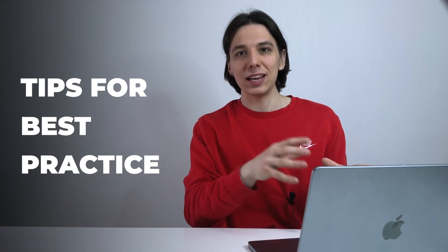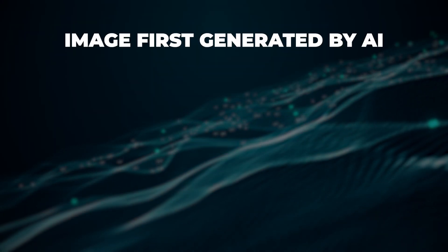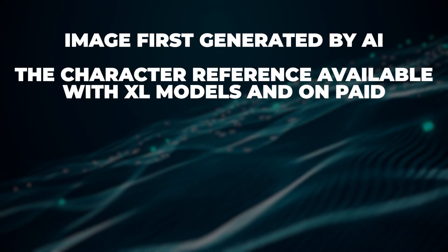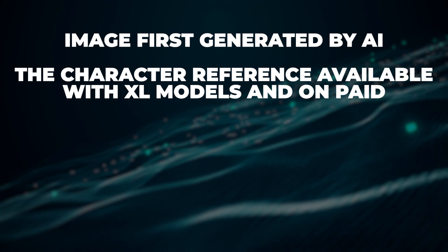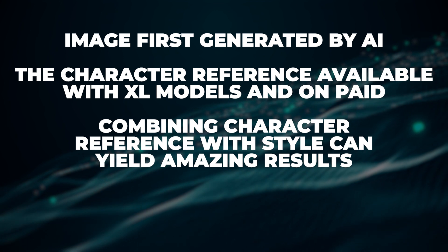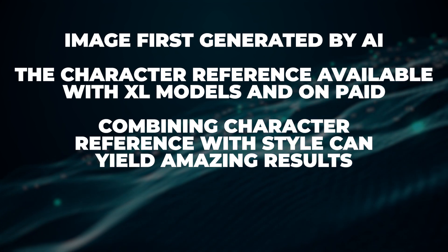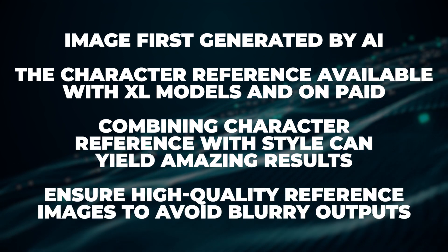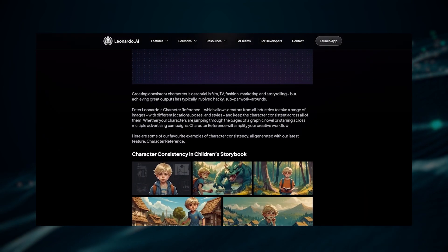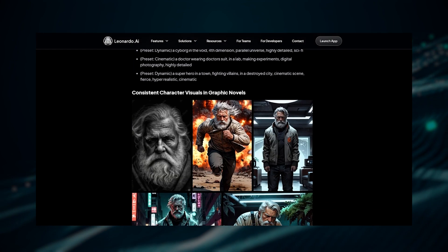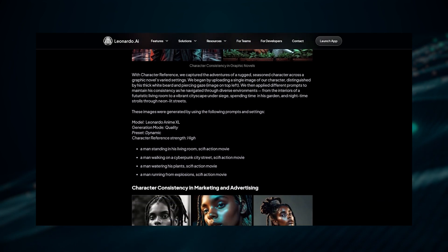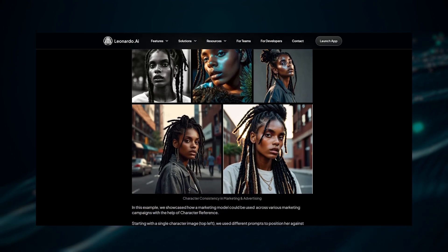I've gathered some tips and tricks for best practice with the character reference feature. For better consistency, use an image of a person first generated by Leonardo AI. Also, the character reference feature is available only with XL models and on paid plans, so remember that. You can also combine character reference with style or multi-style reference for amazing results. Use high quality reference images and avoid blurry outputs. Finally, use Leonardo AI's own article to generate exact prompts and get the best results — it tells you which prompts work best for your needs.